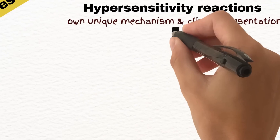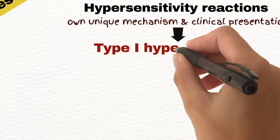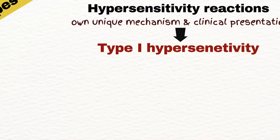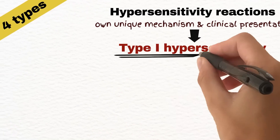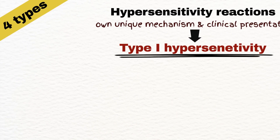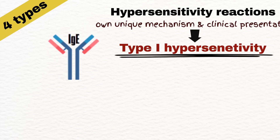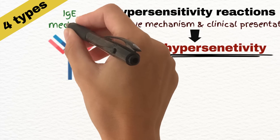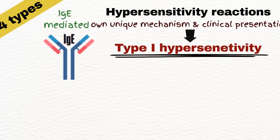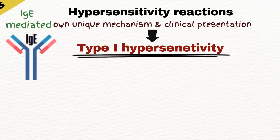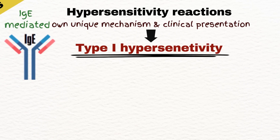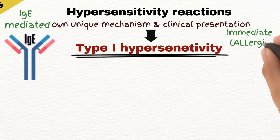Let's begin with type 1 hypersensitivity. This type involves immunoglobulin E antibodies, so it is immunoglobulin E mediated. It is known as immediate hypersensitivity reactions or allergic reactions.